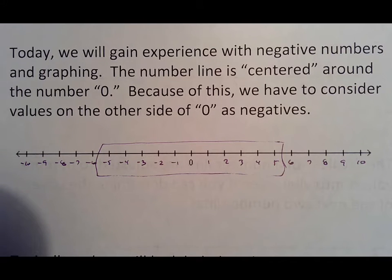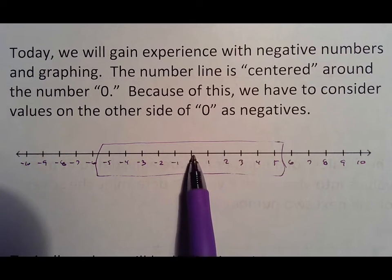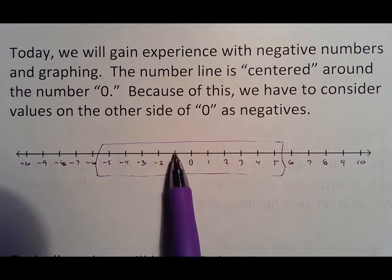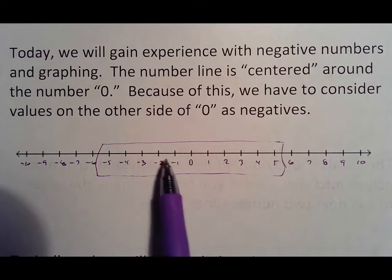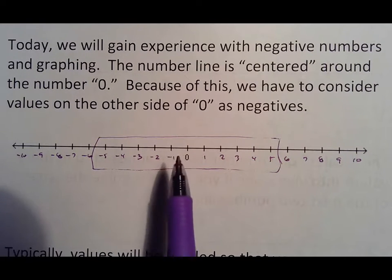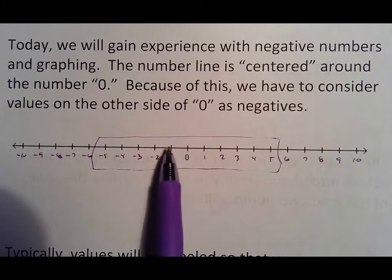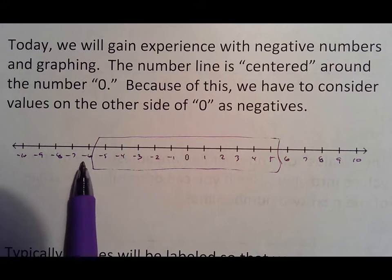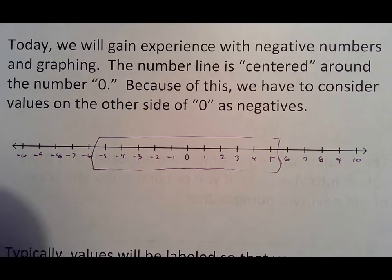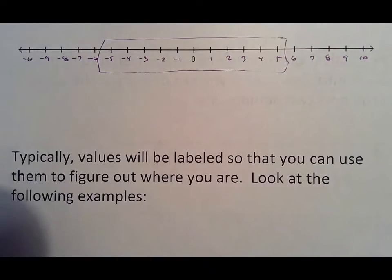Zero is your center. As you're going forward you go one, two, three. As you're going backwards from zero you go negative one, negative two, negative three — you just put a negative sign in front of whatever number it is. What I typically do when I count to negative six is go backwards and count to six: one, two, three, four, five, six — and then I recognize that because I went backwards, it is negative.